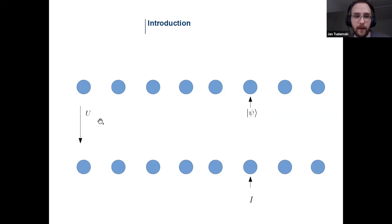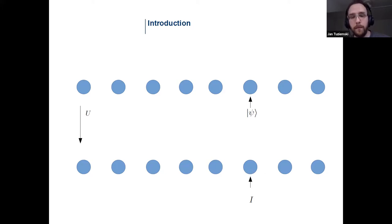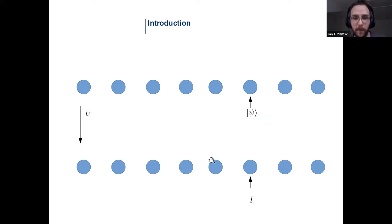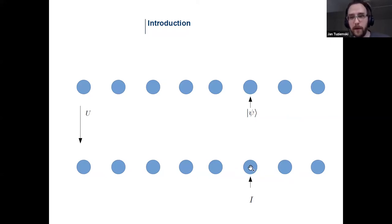Now let me evolve the system according to a unitary generated by the Hamiltonian of this quantum many-body system. After some time, if you try to recover the state of that qubit with the help of local measurements, typically you would not be able to do so, because quantum information spreads over the degrees of freedom of the system — correlations are established between different qubits and local information is locally lost.